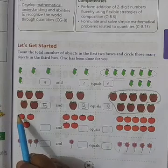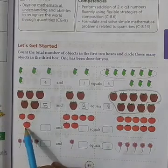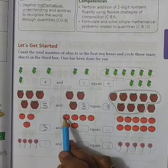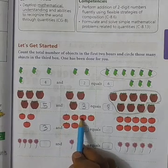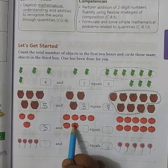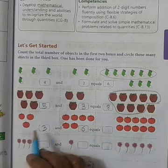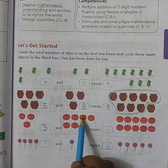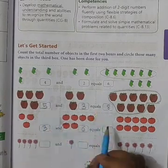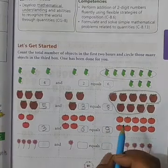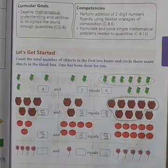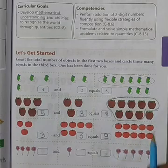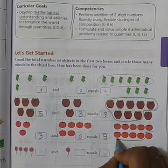Now next, here you are given tomatoes. Count these: 1, 2, 3 — write 3 here. Now count these: 1, 2, 3, 4, 5, 6 — write 6 here. Combined, count all: 1, 2, 3, 4, 5, 6, 7, 8, 9 — there will be nine tomatoes. Now circle 1, 2, 3, 4, 5, 6, 7, 8, 9 — circle the nine tomatoes. This gives the addition of the first two boxes.